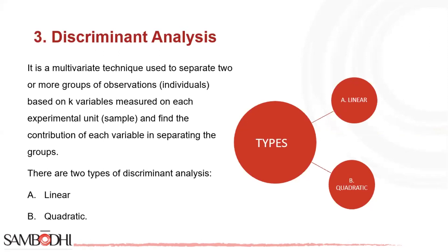If group membership is based on values of a continuous variable, then consider using linear regression to take advantage of the richer information. The procedure is most effective when group membership is a truly categorical variable.